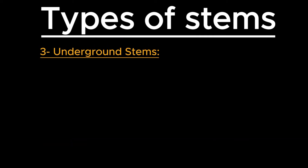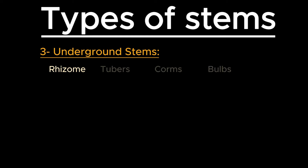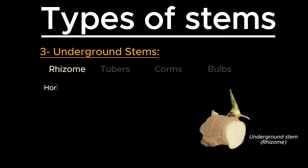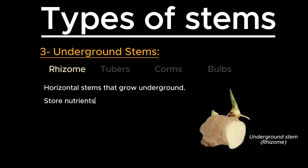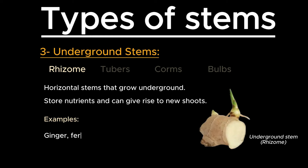Next are underground stems. Underground stems are of four types: rhizomes, tubers, corms, and bulbs. Rhizomes are horizontal stems that grow underground — they store nutrients and can give rise to new shoots. For example, ginger and ferns.